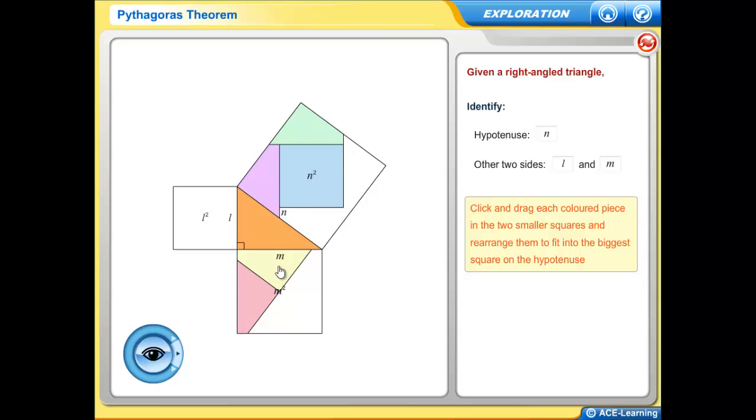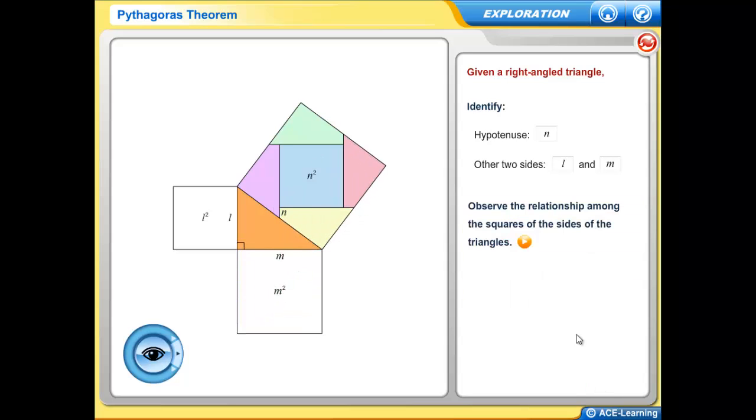A tangram or puzzle adds fun to the exploration. Then, with the aid of animation, the student sees the relationships among the sides of the right-angled triangle. Now the student has come to a simple conclusion.